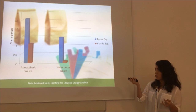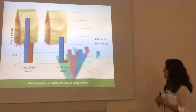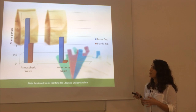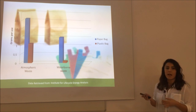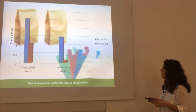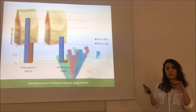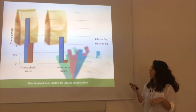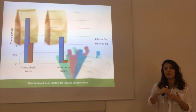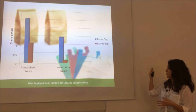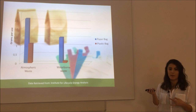I want you to focus on this graph, which I borrowed from the Institute for Lifecycle Energy Analysis. The vertical axis is for grams produced, and the horizontal axis is for waste types like atmospheric waste and waterborne waste. The blue bar represents paper bags and the red bar is for plastic bags. If we look at the bar graph, we can clearly see that paper bags produce more waste compared with plastic bags.